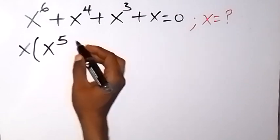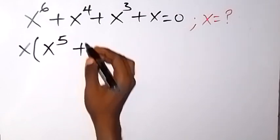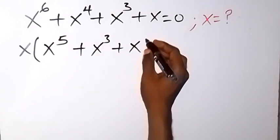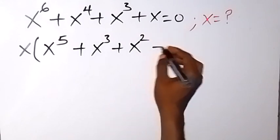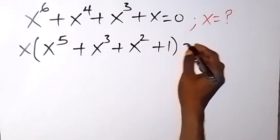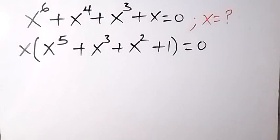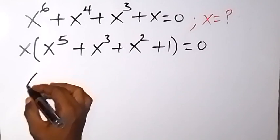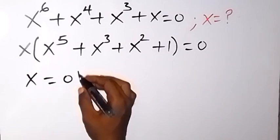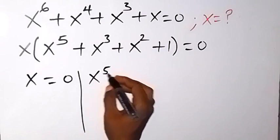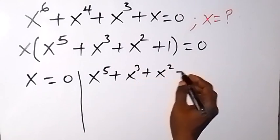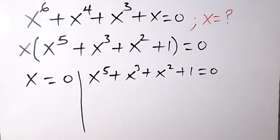Factoring x out, we have x times the bracket x raised to power 5, plus x raised to power 3, plus x raised to power 2, plus 1, which equals 0. So we have two cases: x equals 0, and x raised to power 5 plus x raised to power 3 plus x raised to power 2 plus 1 equals 0.